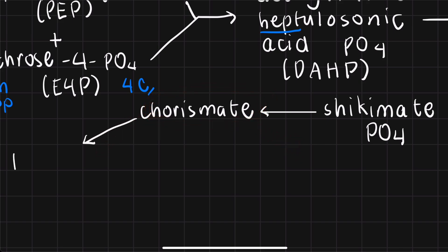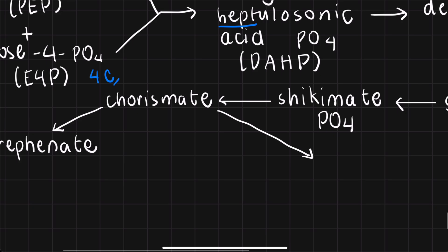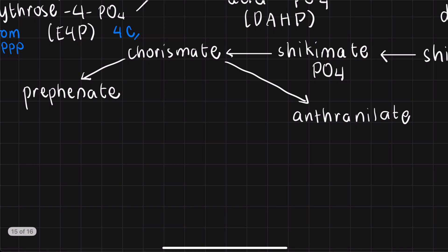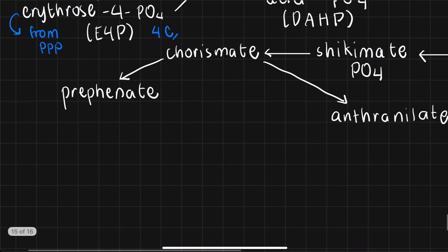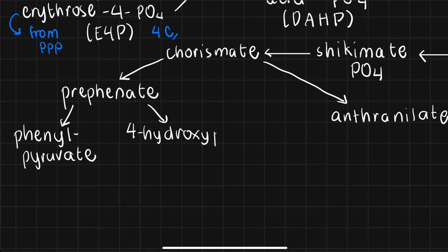First, chorismate can either be converted or can first be converted to prephenate. Or alternatively, chorismate can be converted to another acid, which is anthranilate or anthranilic acid. Furthermore, if we have prephenate, this guy can further branch out. So it can either become phenylpyruvate or 4-hydroxyphenylpyruvate.